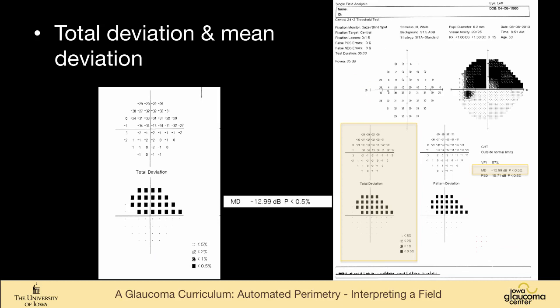Total deviation is a measure of how much this person's sensitivity at each point varies from someone else their age. So this patient is 53 years old, and these points are depressed significantly, as you would expect, looking at the raw data and the grayscale, from somebody else who is 53 years old. It assigns a probability value to the depression of these points, and everything in total deviation is center-weighted, so if you have something that's depressed centrally, it's more important and more reproducible than something in the far periphery.